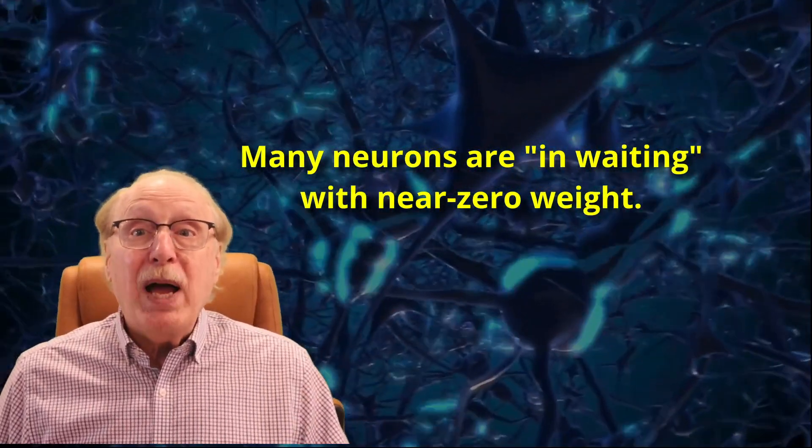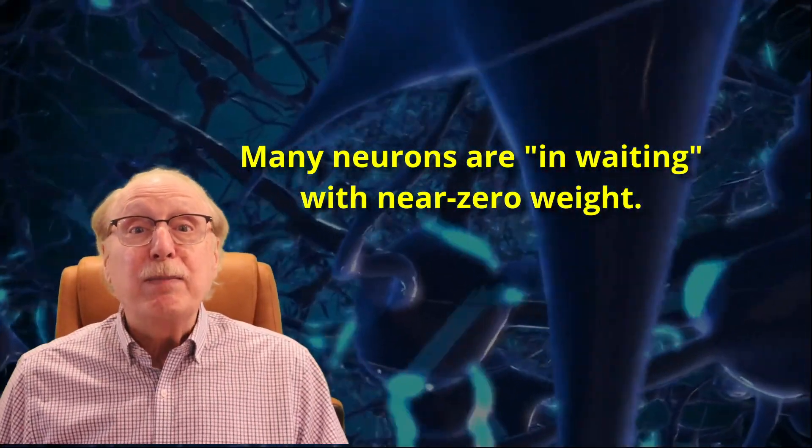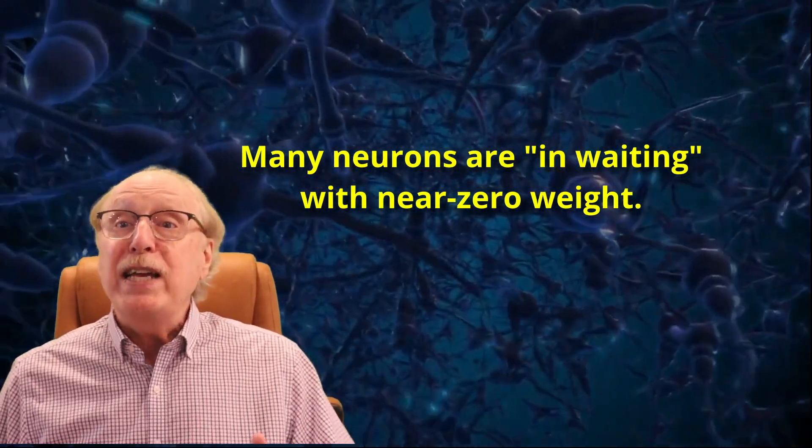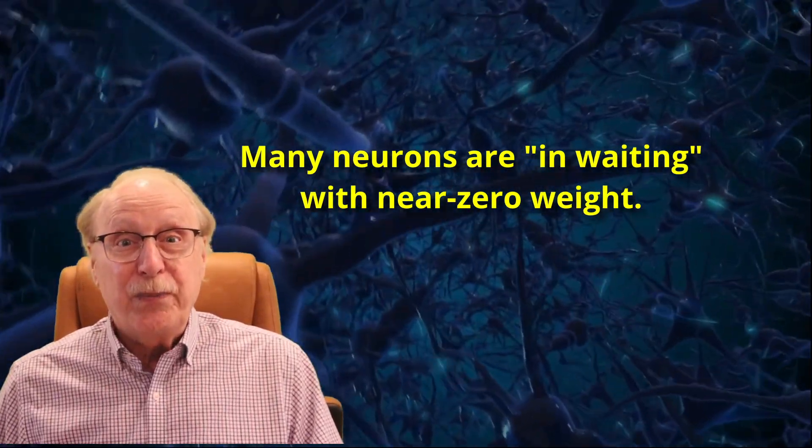Since your brain seems to be able to relate almost anything to almost anything else, almost instantly, your brain clearly contains a lot of synapses of near zero weight just waiting to be pressed into service. While a neuron might have 10,000 synapses, brain research shows that only a few percent of these have weights which are not near zero. This is a key observation when we consider how much computational power we'll need to achieve human level AI.